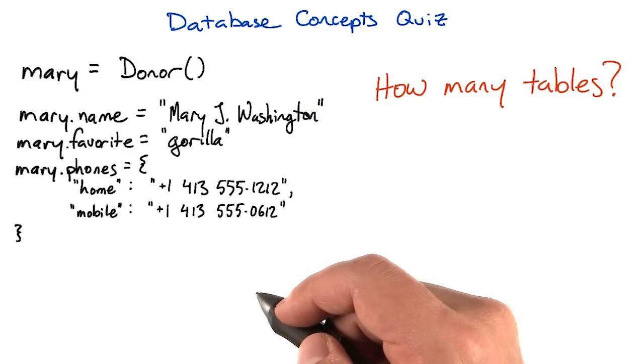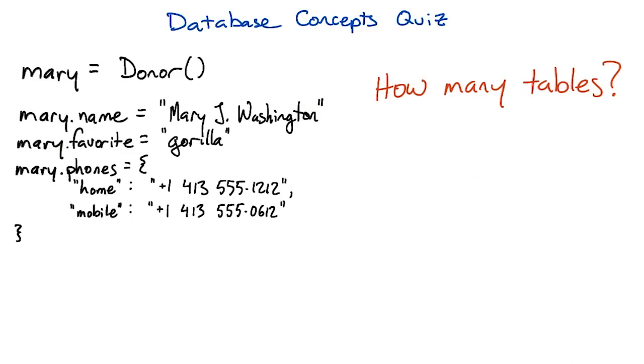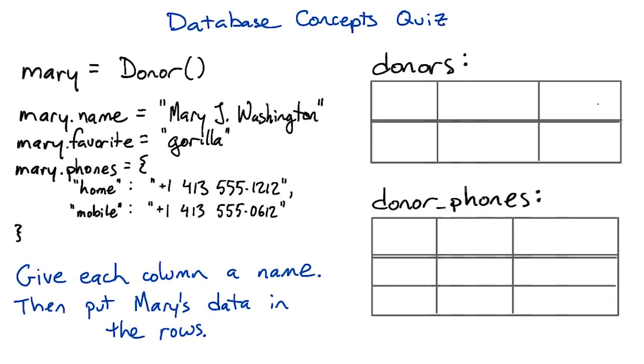So if we wanted to store this information in a relational database, instead of just in objects in memory, how many tables do you think we'll need? Oh wait, not that kind of tables. This kind of tables.